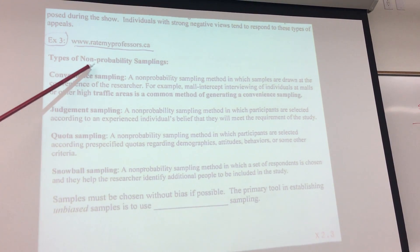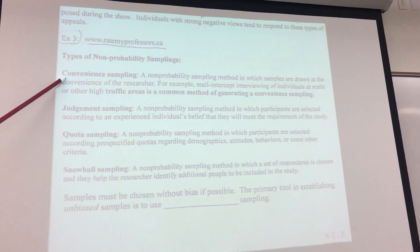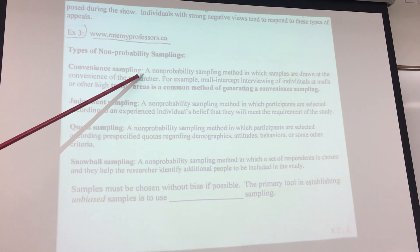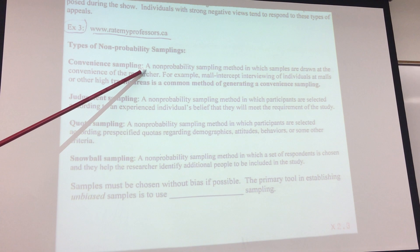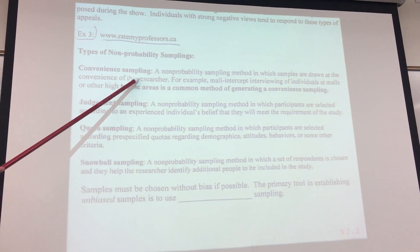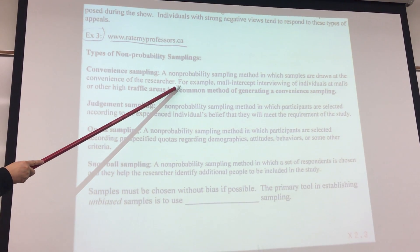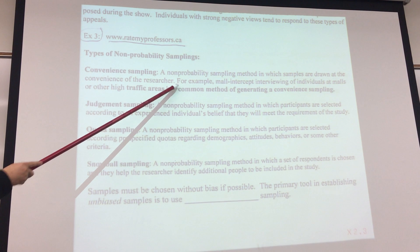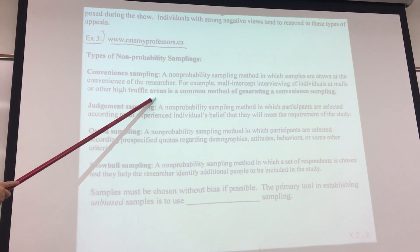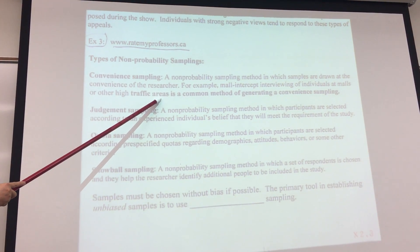Let's look at types of non-probability sampling. First one: convenience sampling. A non-probability sampling method in which samples are drawn based on the convenience of researchers. For example, mall intercept interviewing of individuals at malls or other high traffic areas is a common method of generating a convenience sample.